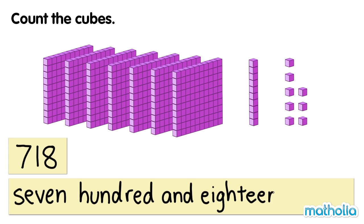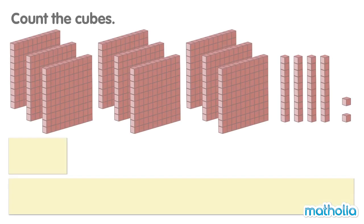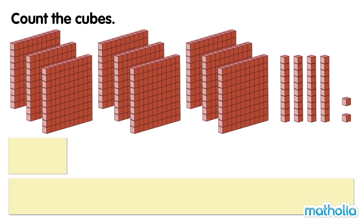Count the cubes. 100, 200, 300, 400, 500, 600, 700, 800, 900, 910, 920, 930, 940, 941, 942. There are 942 cubes.